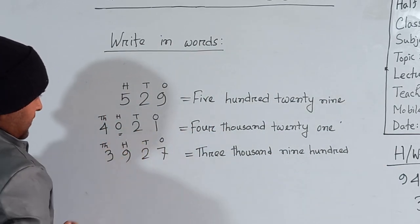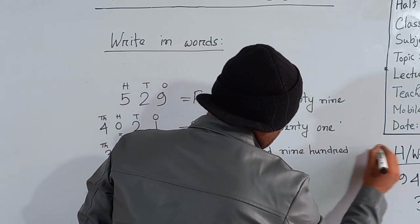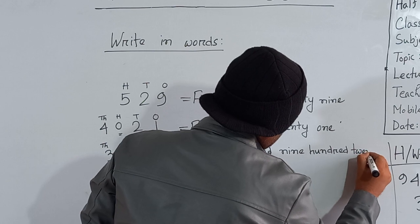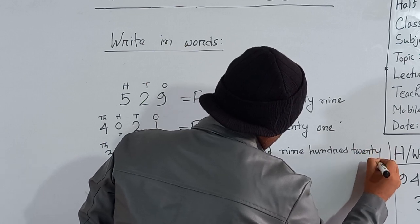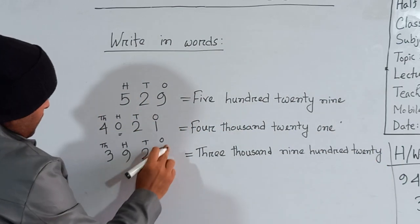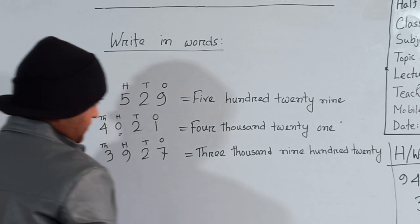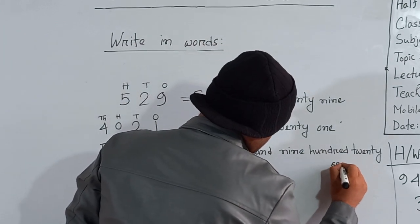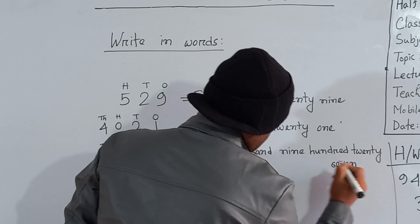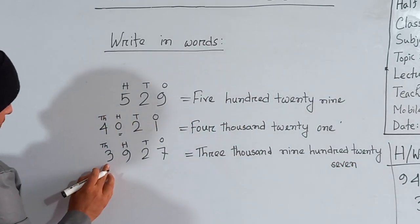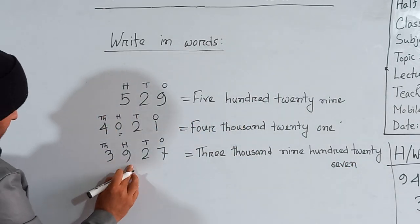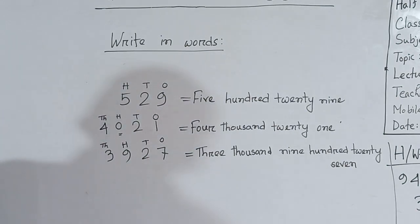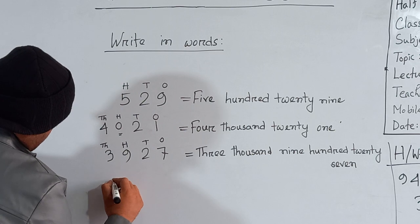Two tens means twenty, so you can write here T-W-E-N-T-Y, twenty. And how many ones are here? Here is seven ones — S-E-V-E-N. So we can write here three thousand nine hundred twenty seven.